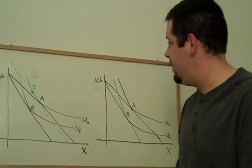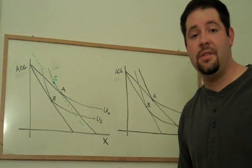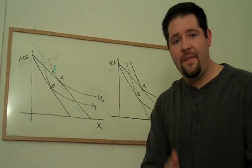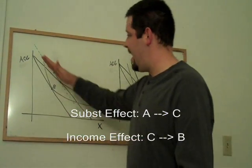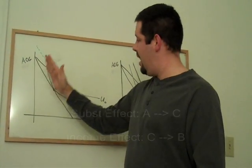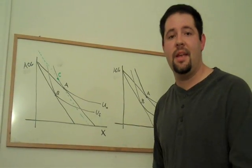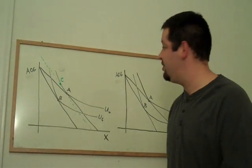This point is labeled C for being the compensated point. If we want to find the substitution effect, one way to do that is after the price, we just compensate the individual until he has the same utility as before the price change.